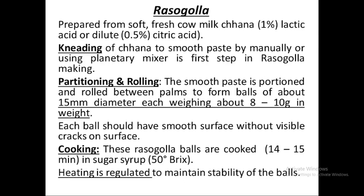Rasagola is a chana-based product. For chana preparation for rasagola, we use cow milk. The main reason is that cow milk contains less calcium, which imparts hardness. Calcium is important for paneer preparation where a hard body is needed, but chana needs to be soft so we can reshape it — for example, portioning and shaping chana balls for rasagola. That is why cow milk is preferred.